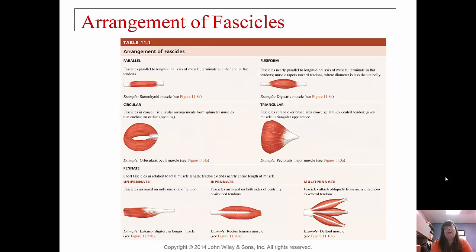Here are some fascicular arrangements: parallel, fusiform, circular, triangular, and then pennate — either unipennate, bipennate, or multipennate. There are some examples that go along with those, so make sure you're familiar with them.